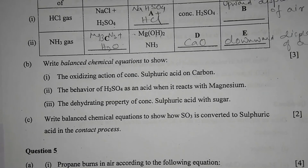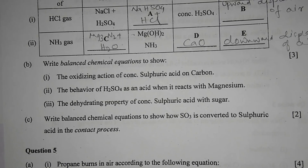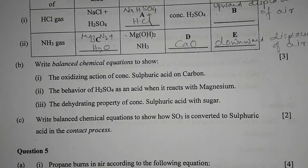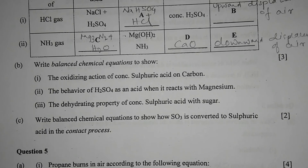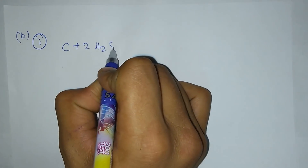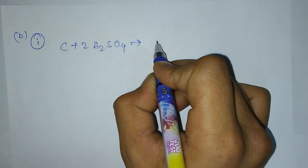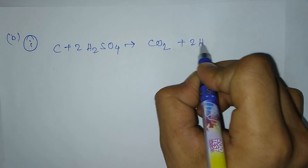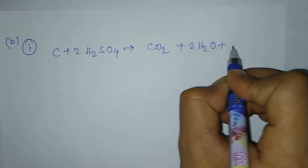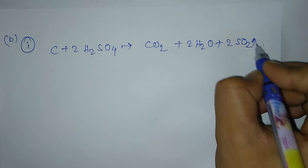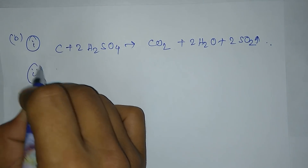Question 4b: write balanced chemical equations. Number 1 — the oxidizing action of concentrated sulfuric acid on carbon: carbon reacts with sulfuric acid to give CO2 and SO2 gas.